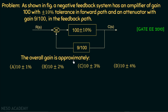We have four different options, all framed as overall gain with a tolerance. Firstly we need to find the overall transfer function of the system, and then find the overall tolerance using the sensitivity of the overall transfer function with respect to the forward path gain.